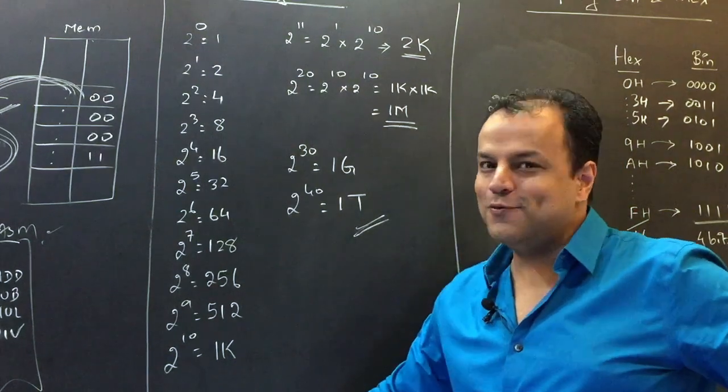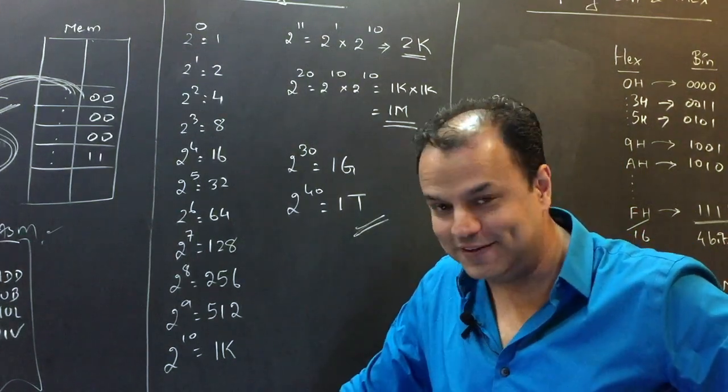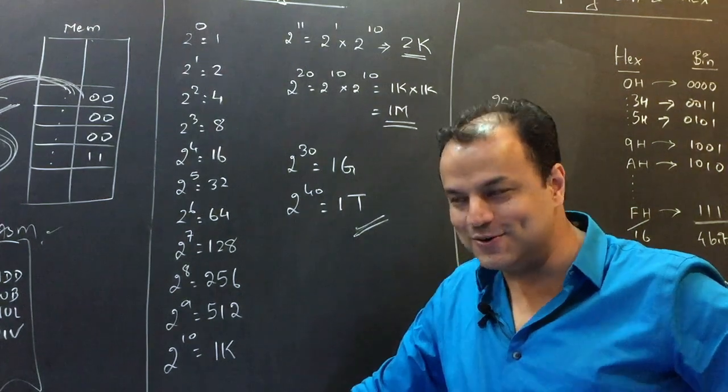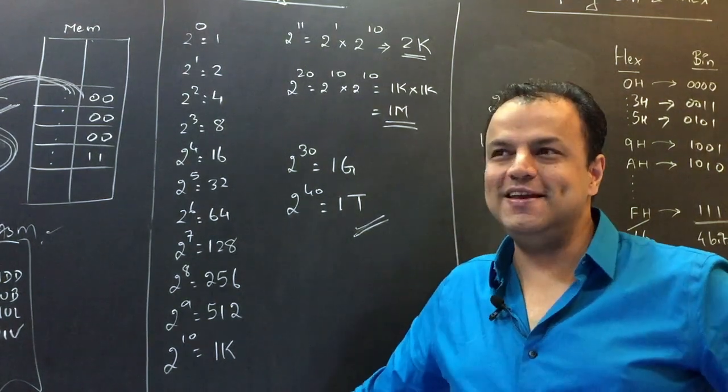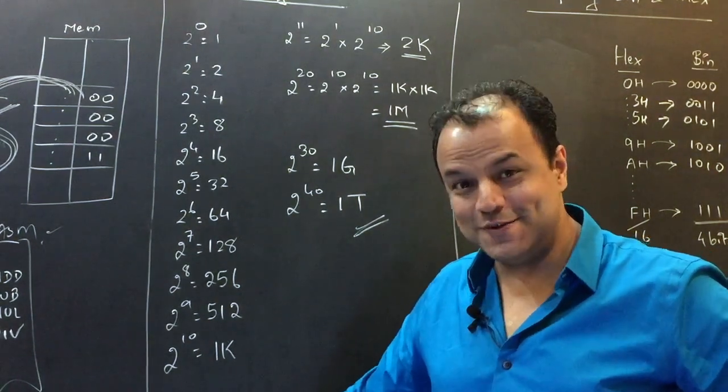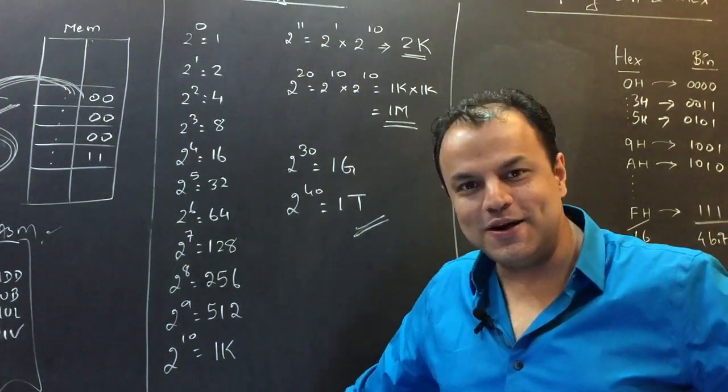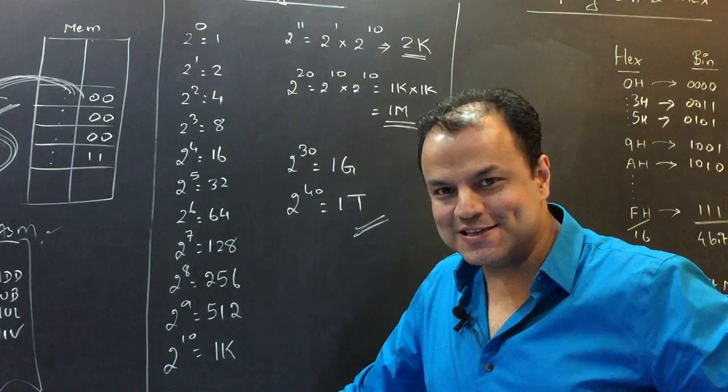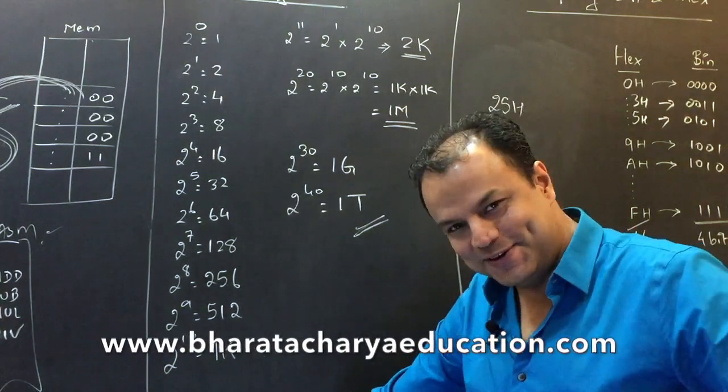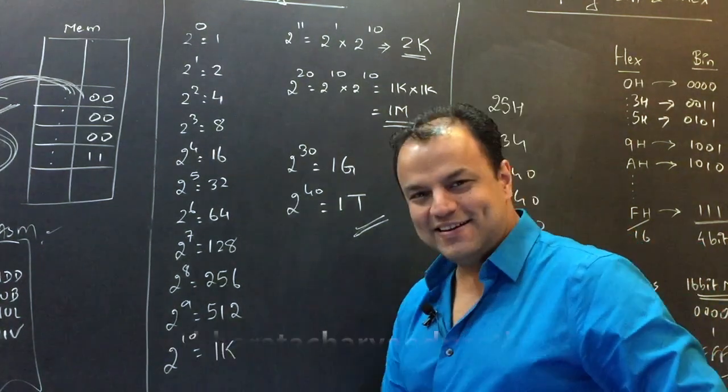What is two raised to 24? Two raised to 24, 16 mega. Two raised to 26, 64 mega, 64 MB if you want to say it that way. Two raised to 28, 256 mega. Two raised to 29, 512 mega.